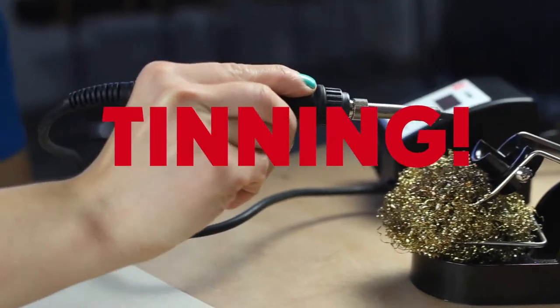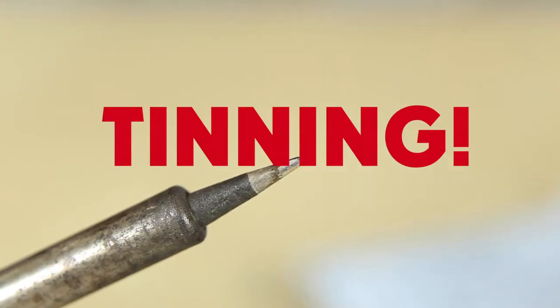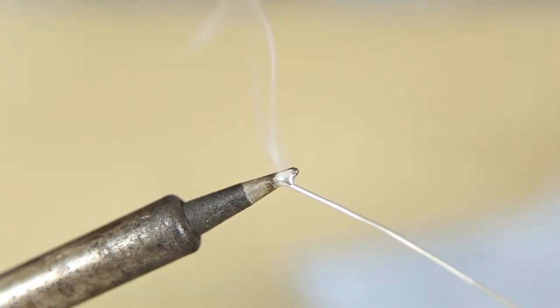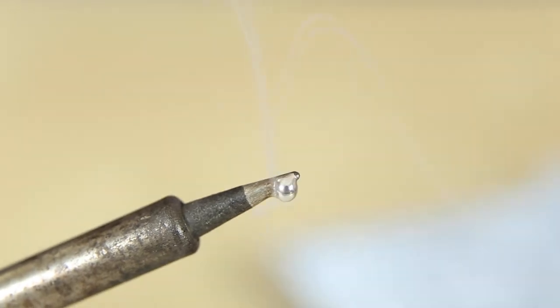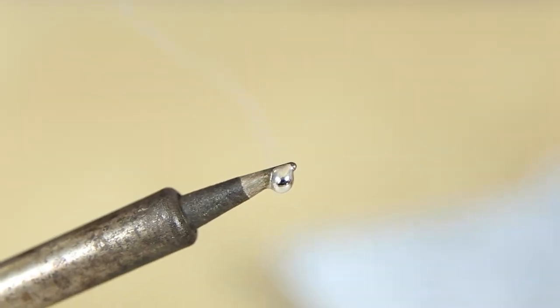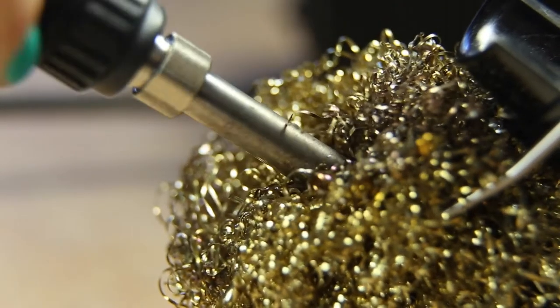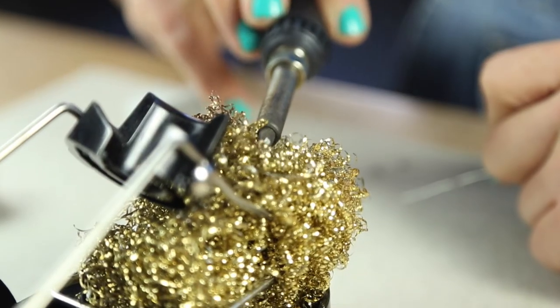This is called tinning. To tin your tip, melt solder onto the tip and leave it to warm up for a few seconds. Then, using your wire wall or sponge, wipe off the excess to be left with a beautiful shiny tip.